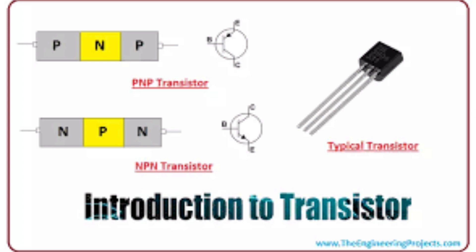A transistor is a fundamental building block of modern electronics. It is a type of semiconductor device that can amplify and switch electronic signals. The basic function of a transistor is to control the flow of electric current between two points by using a third terminal called the gate, which is used to control the flow of electrons between the other two terminals.